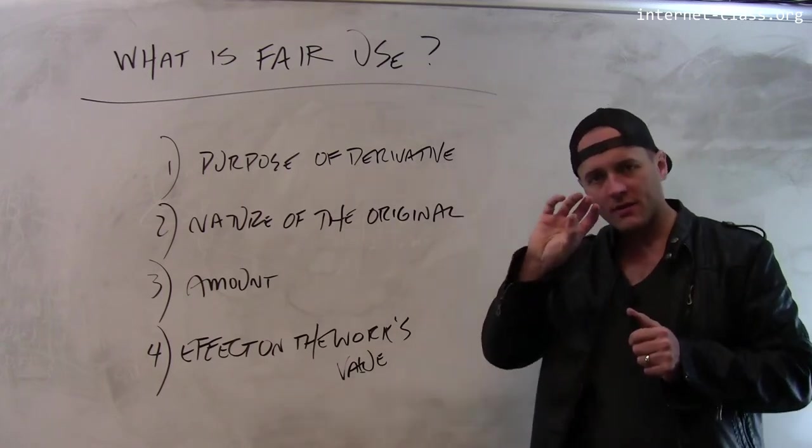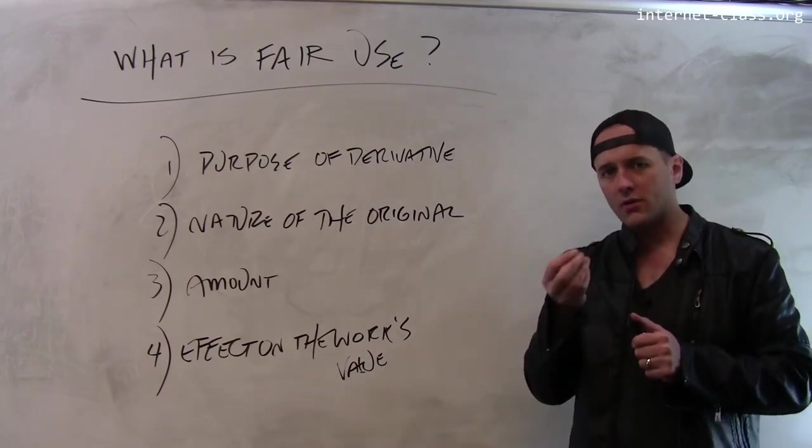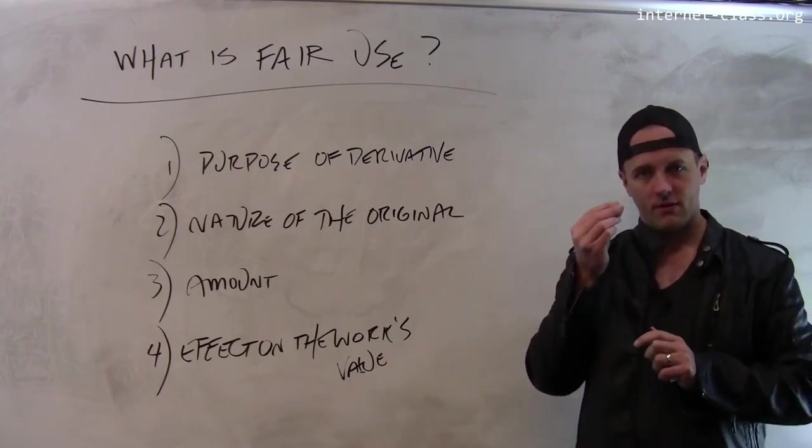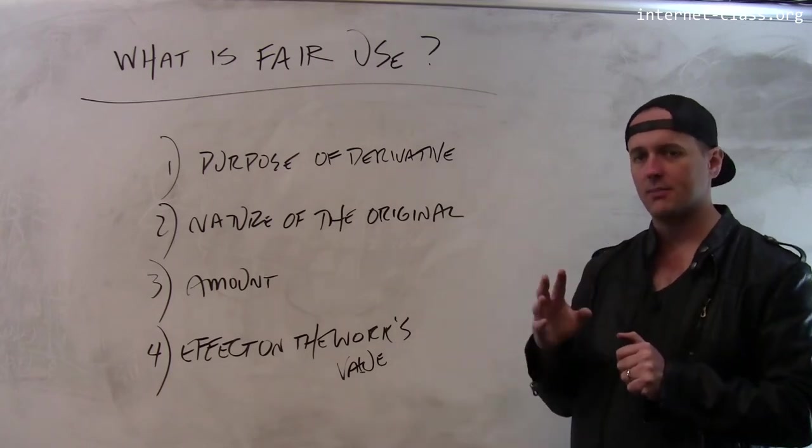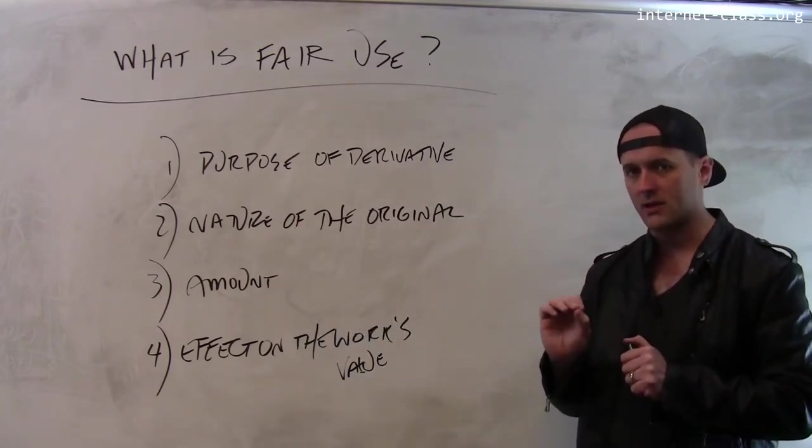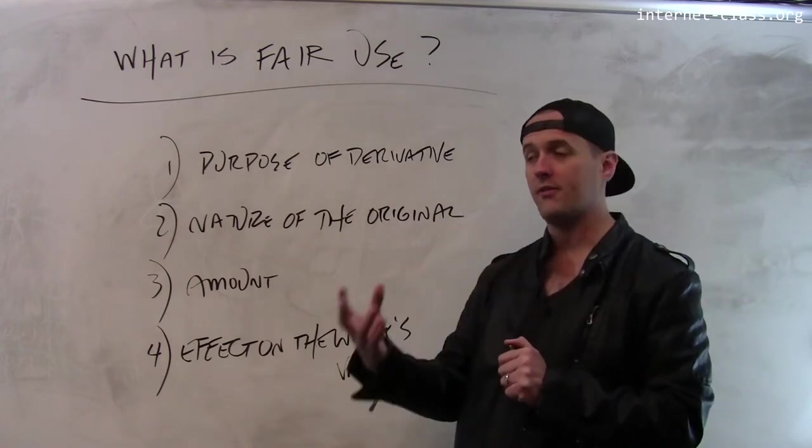Fair use carves out space for people to use parts of copyrighted work without permission if certain guidelines are met. There are four guidelines typically considered when determining whether a particular use of material falls into the category of fair use.